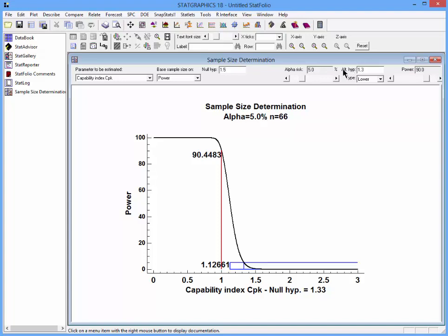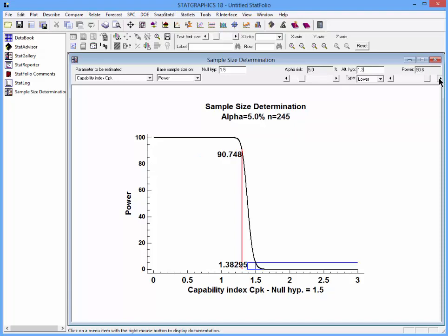This time I'll need to specify both a null hypothesis of 1.5 and also an alternative hypothesis of 1.3. I'll ask it for a 5% alpha risk and a power of 95%. So I'll need to up this from 90% to 95%.